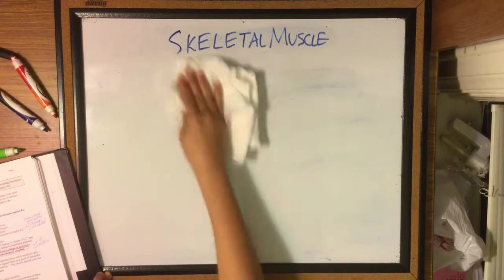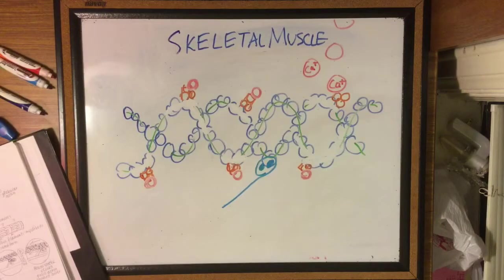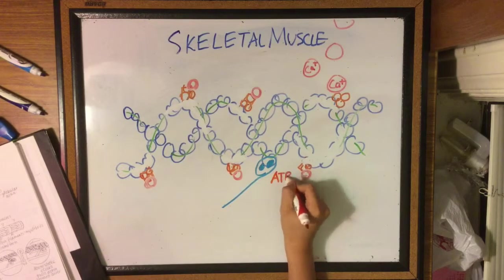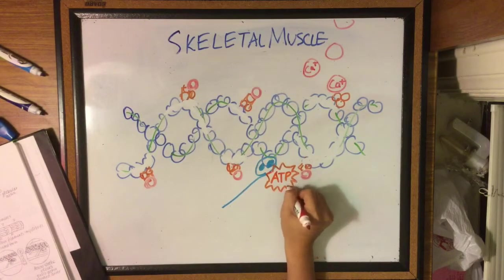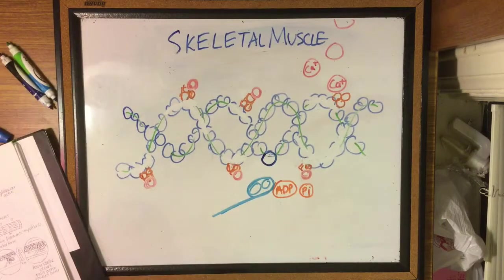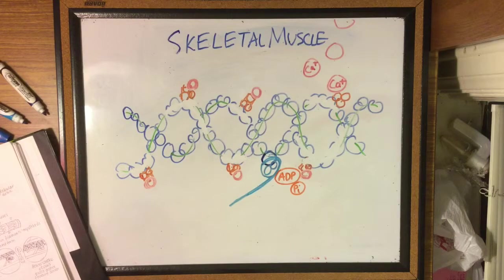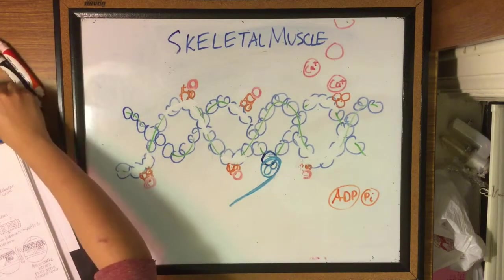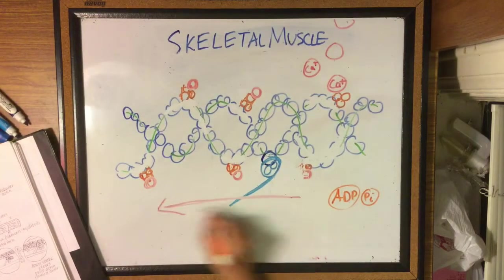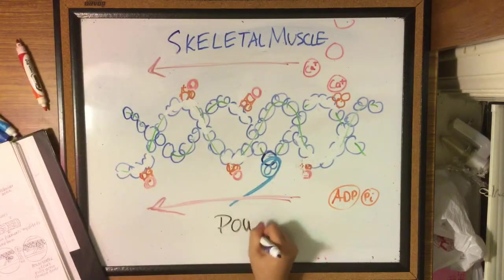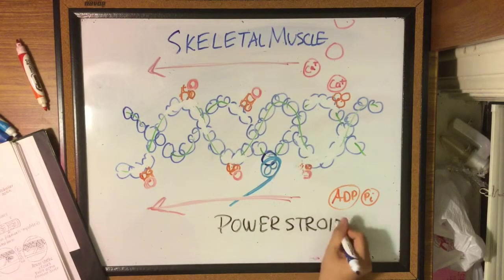They also contain myoglobin which has oxygen. Now that we have ATP, it binds to the myosin which removes it from the actin site, and the ATP splits into ADP and phosphate and the myosin reconnects to the actin. When ADP and phosphate are released, the power stroke occurs which pulls the actin towards the center of the sarcomere. This is actually called the sliding filament theory of contraction that you need to know.